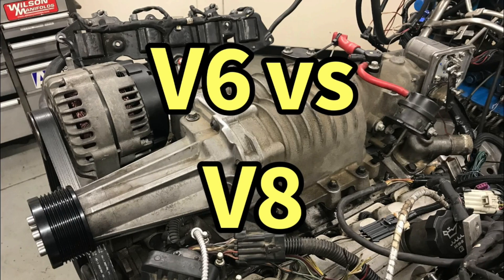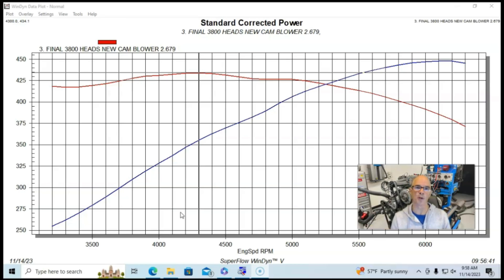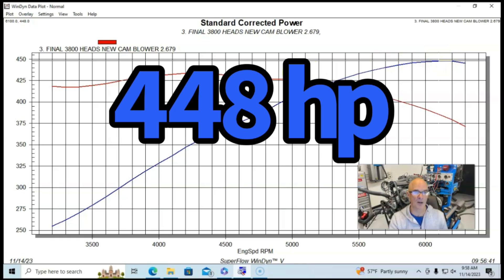Now let's take a look at a direct comparison between the 3800 V6 with the M90 and the 2.6 inch blower pulley and the 4.8 liter V8 with the same blower setup. This is our V6—we had 448 horsepower and 434 foot-pounds of torque.